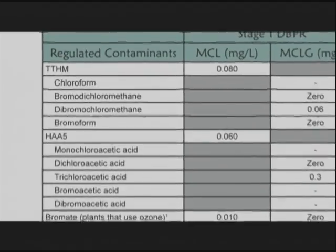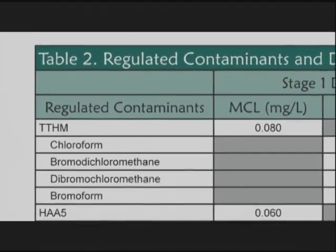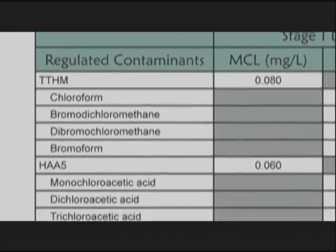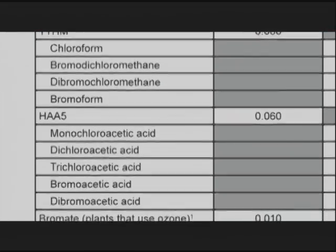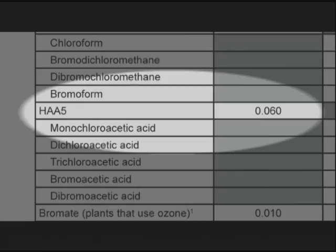The maximum contaminant level, or MCL, for total trihalomethanes is 0.08 milligrams per liter, or 80 parts per billion. The MCL for all five haloacetic acids is 0.06 milligrams per liter, or 60 parts per billion.